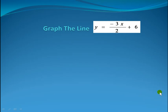Welcome. We're going to graph the line y equals negative 3 halves x plus 6. How are we going to do this? We're going to use the slope and y-intercept method.